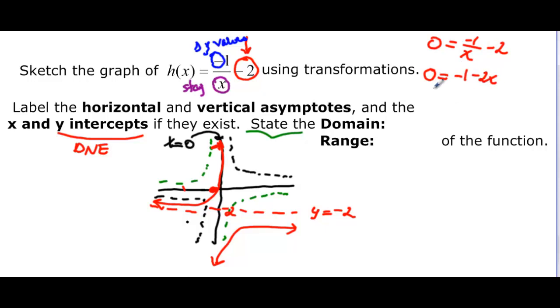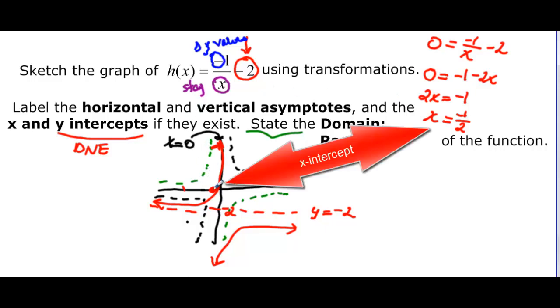And if we bring the negative two x to the other side, we have two x is equal to negative one. And then solving for x, we would say that x is equal to negative one half. And if we look at our graph, that sure enough, that looks like negative one half right there.